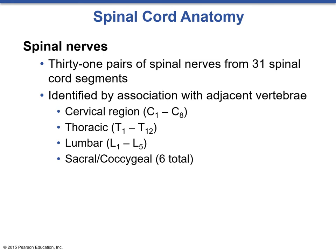There are 31 pairs of spinal nerves that come out from each portion of the spinal cord segment, matching each one. They are identified by the association with the adjacent vertebrae. The cervical region is C1 through C8, thoracic is T1 through T12, lumbar is L1 through L5, and there are six total in the sacral and coccygeal region.